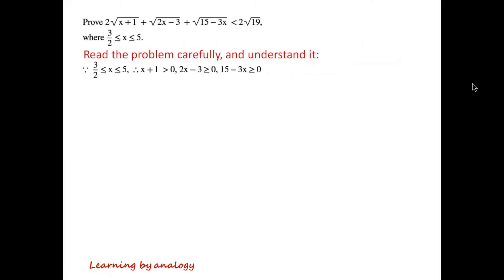Because 3/2 ≤ x ≤ 5, we have x+1 > 0, 2x−3 ≥ 0, and 15−3x ≥ 0. So √(x+1) squared is still x+1, √(2x−3) squared is still 2x−3, and √(15−3x) squared is still 15−3x.